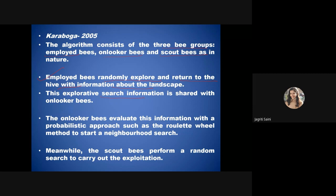Onlooker bees gather information about the neighborhood and identify food sources. The roulette wheel method can be used to select the best possible target to exploit. Scout bees then perform random searches based on the solutions provided by onlooker bees and start exploitation. They minimize search time by sharing information and identifying the best possible source before moving to the next target.